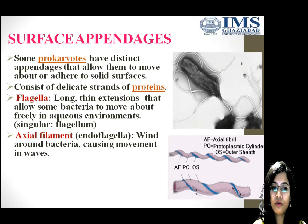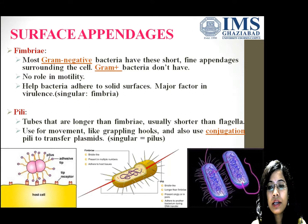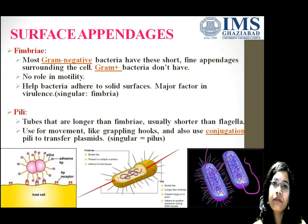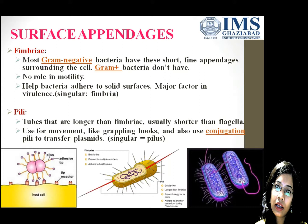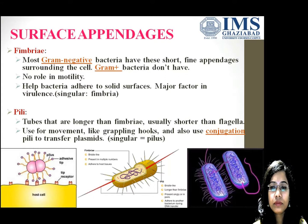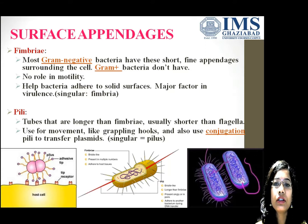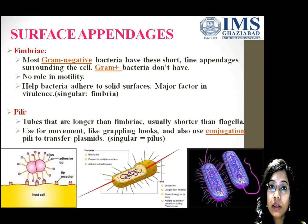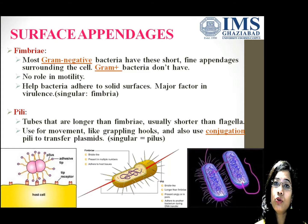Next come fimbriae. Fimbriae are short, fine appendages. Most gram-negative bacteria possess these appendages, whereas gram-positive bacteria lack them. Fimbriae have no role in motility, but they help bacteria adhere to solid surfaces. A major factor is providing virulence — virulence means the ability of the bacteria to cause disease. If a bacterium has fimbriae in maximum number, it has maximum ability to cause infection in human beings or animals.